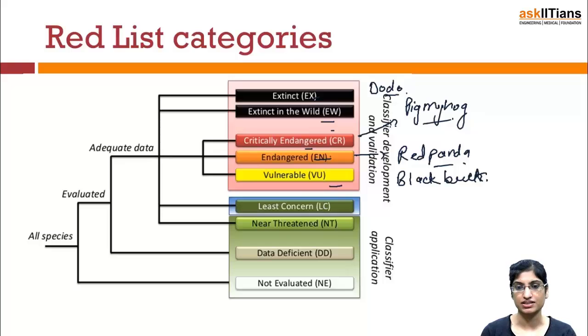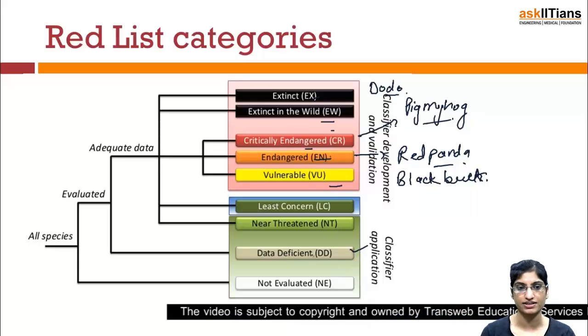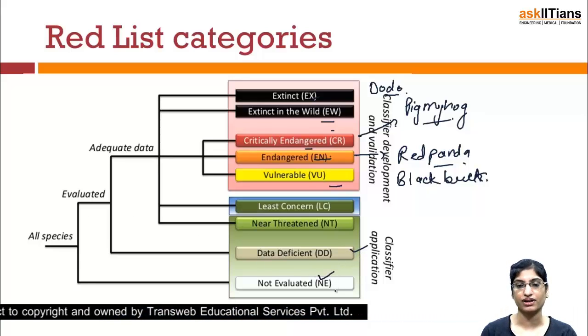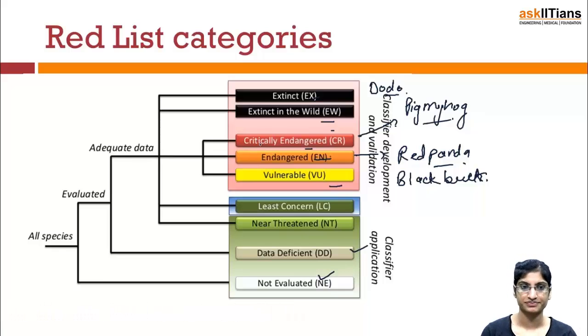Then there is Least Concern, where adequate data is present and the species has been evaluated. Next is Data Deficient, where no data is available. And then Not Evaluated, meaning the species has not even been evaluated yet. So different categories exist in the Red Data List.